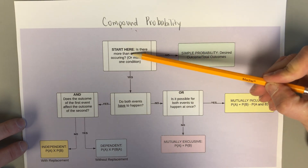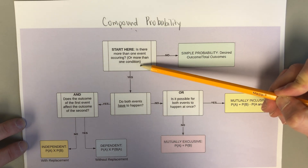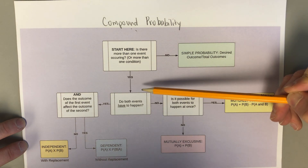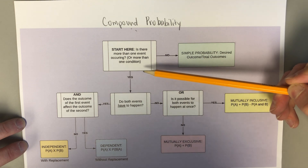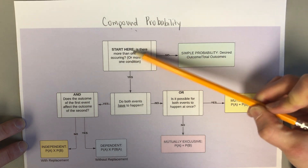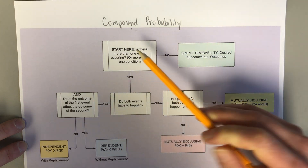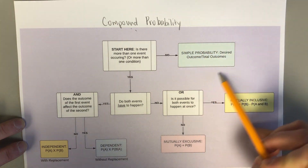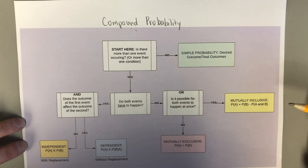In this flowchart you're going to start at the top box and ask yourself: is there more than one event occurring or more than one condition? More than one event could be drawing two cards out of a deck, or rolling a dice once but wanting to know the probability that it's a three or a four — so there's more than one condition. If you say no — for example, what's the probability that you flip heads on a coin — that's just simple probability, where you take the desired outcome divided by the total outcome, so it looks like a fraction.